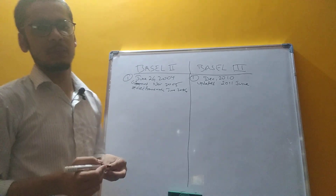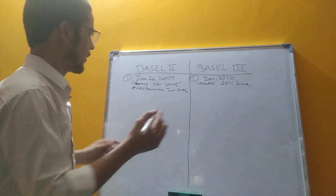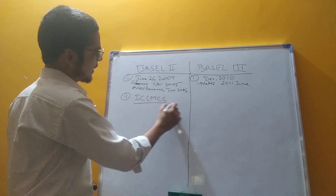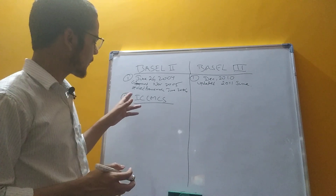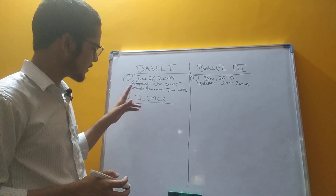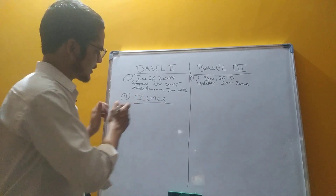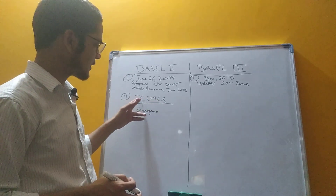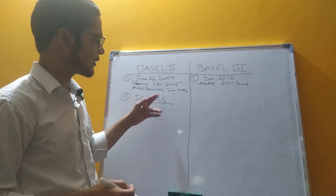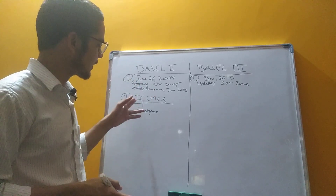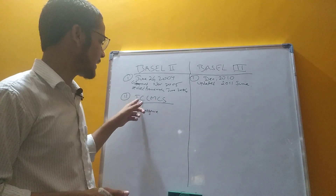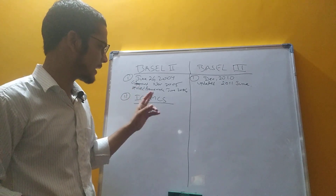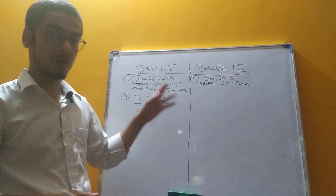One key difference is the full name. Basel 2 is also known as ICCMCS — International Convergence of Capital Management and Capital Standards.